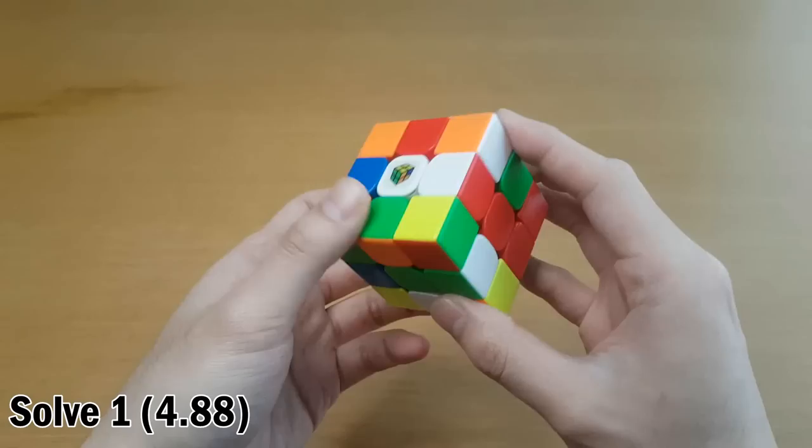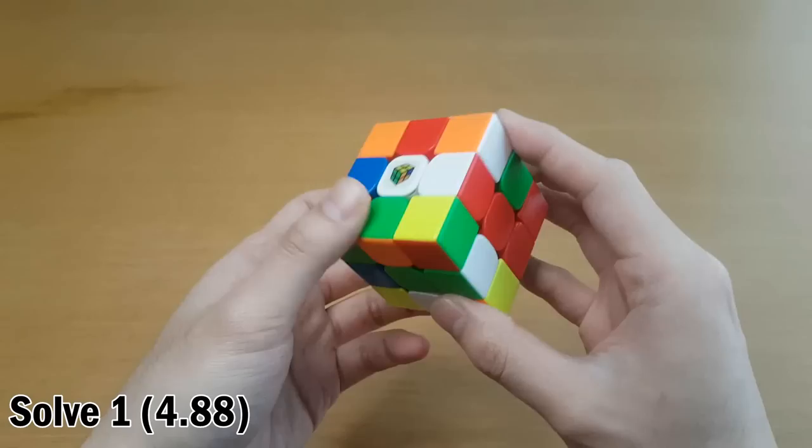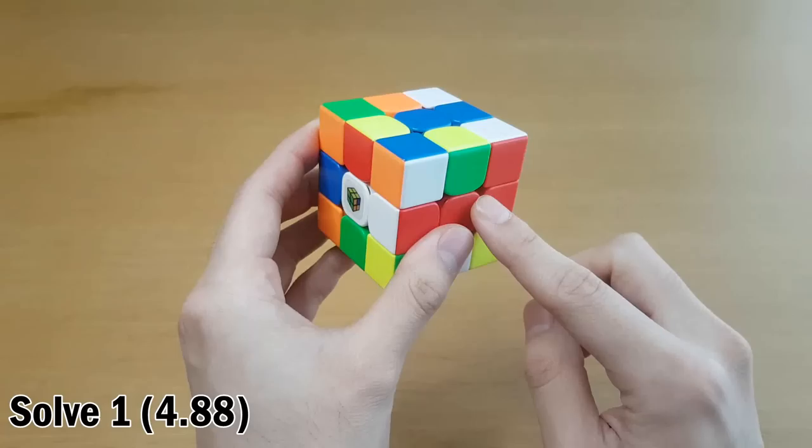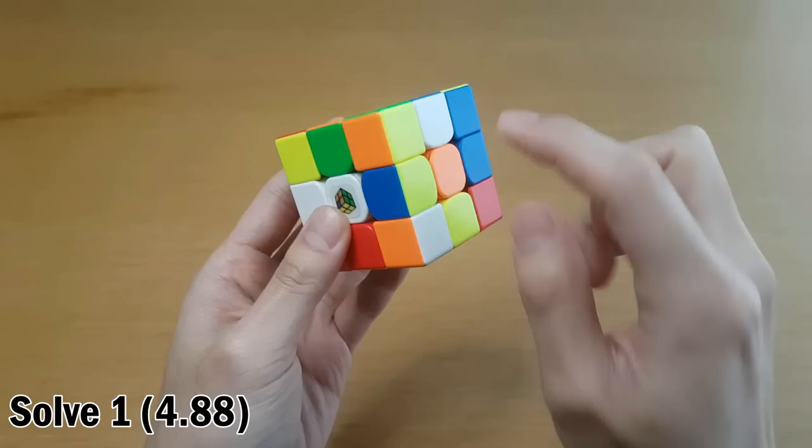The scramble is done with white on top and green on front. For the first solve, Max does the blue cross. Okay, before we get to that, look at the red cross. I'm surprised he didn't do red, but I know there are some cross colors Max doesn't do, and I can't remember if red is one of them. Maybe I'll try red cross later. But Max did the blue cross.